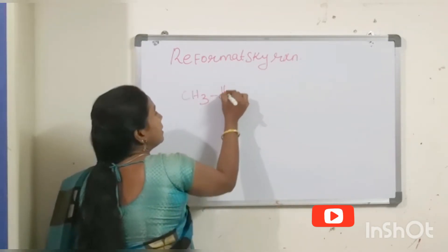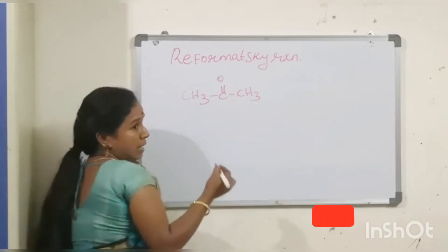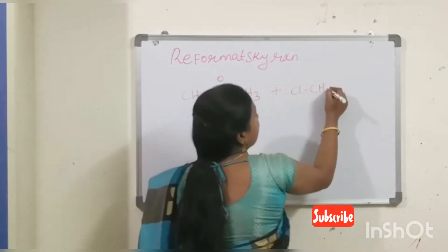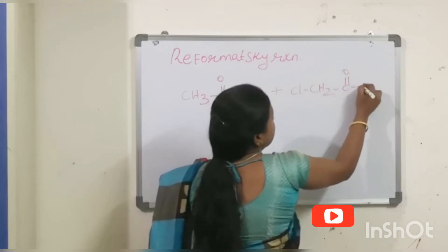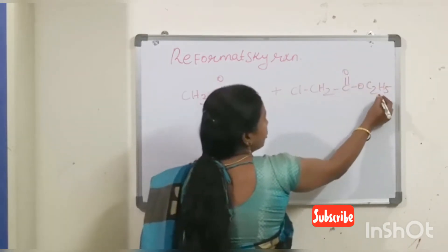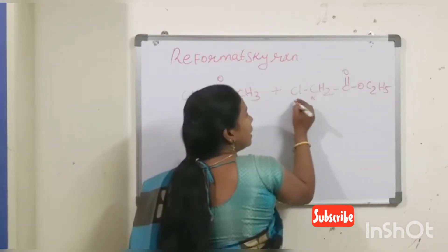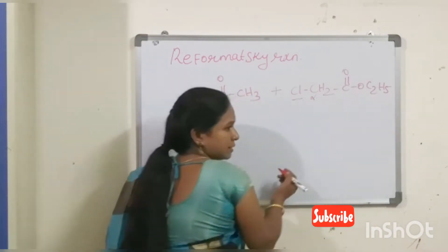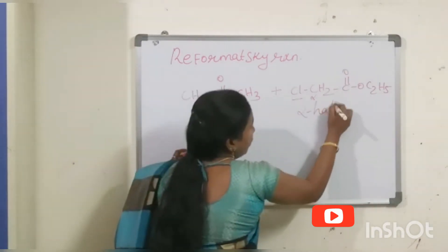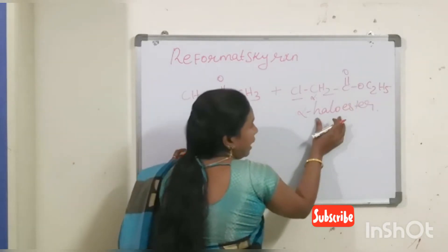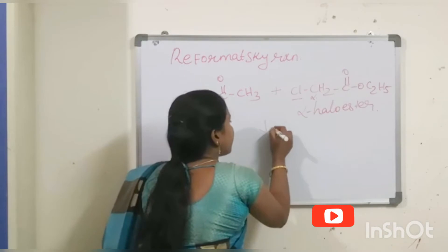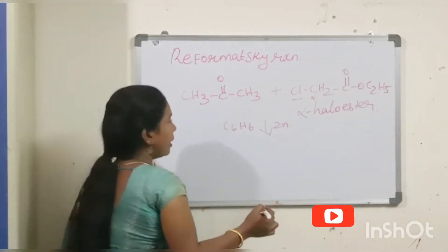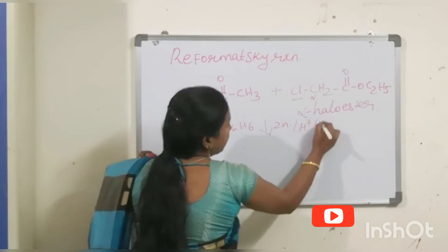For the worked example, we take a ketone — acetone — and it reacts with alpha-haloester. The ester functional group is present, and the second carbon (alpha carbon) bears a halogen, making it alpha-haloester, specifically alpha-chloroacetate or alpha-chloroester. It reacts with zinc metal using benzene as solvent, followed by H⁺ hydrolysis.